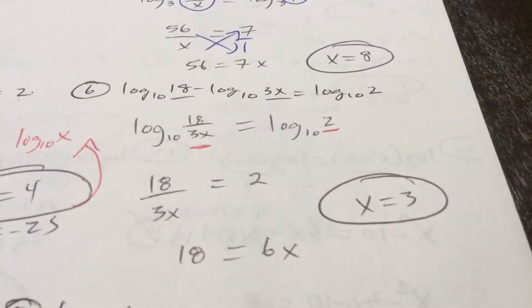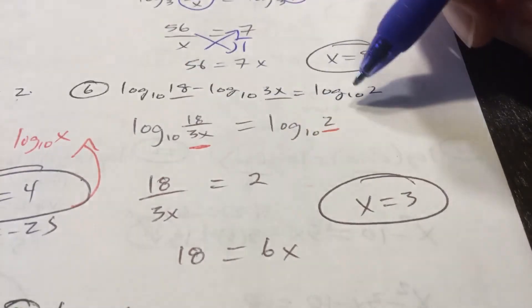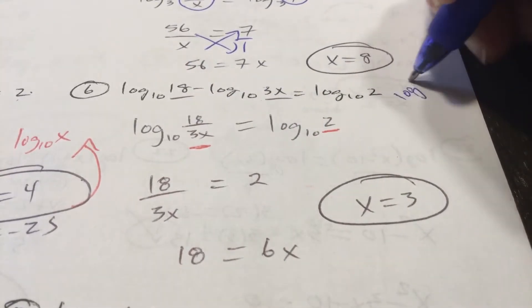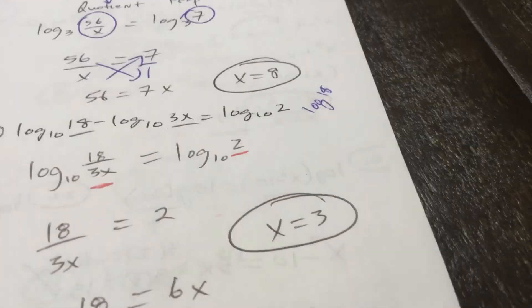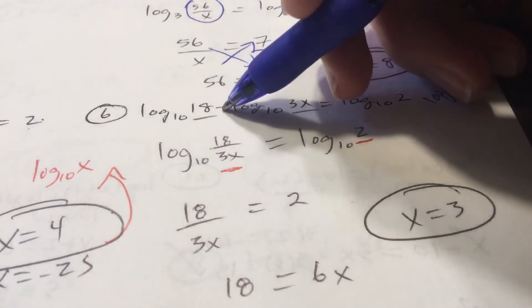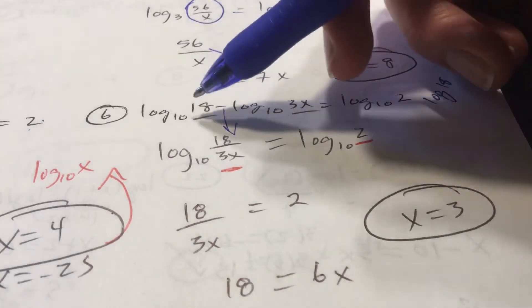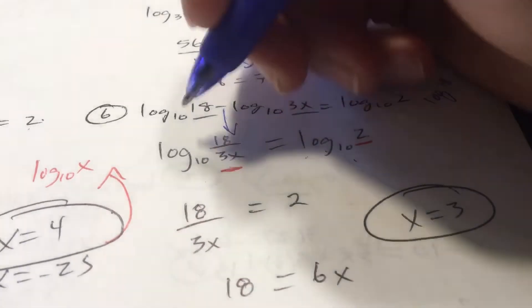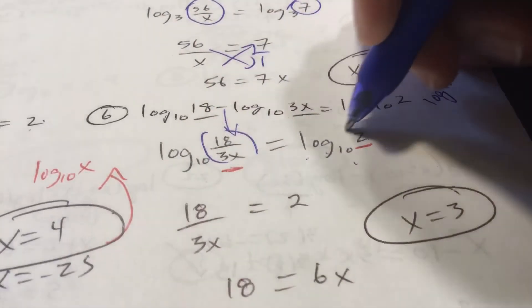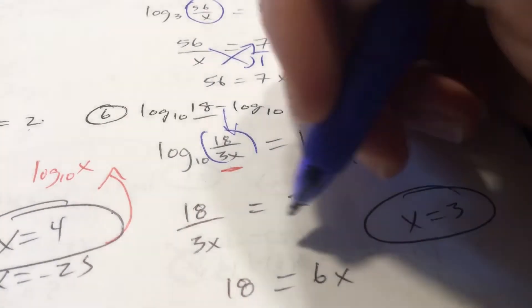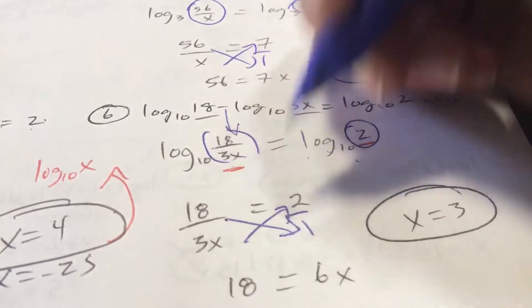Number 6 here in the log world. Again, I've got log base 10. Again, that's the same thing as saying log 18. Log base 10 of 18 is log of 18. 10 is the implied base on your calculator. Subtraction means division in the log world. It's going to be log base 10 of 81 over 3x equals log base 10 of 2. 81 over 3x equals 2. Or 18. I'm sorry. 18 over 3x equals 2. 6x equals 18. x is 3.